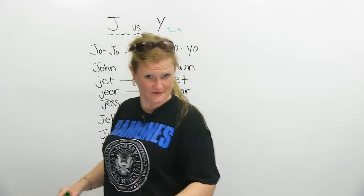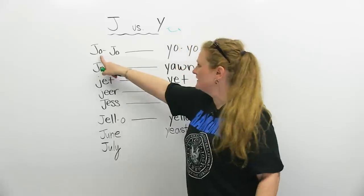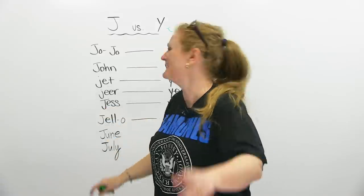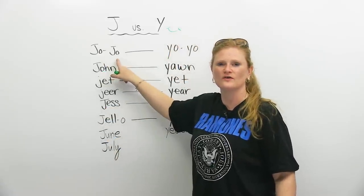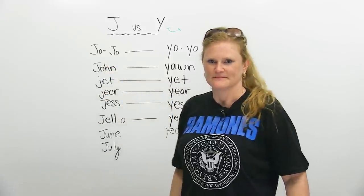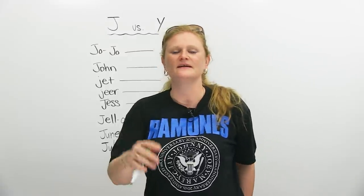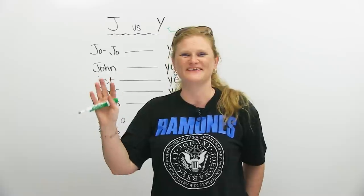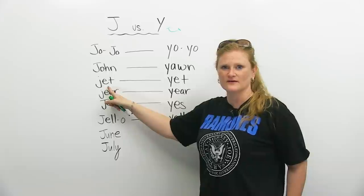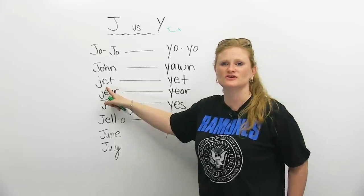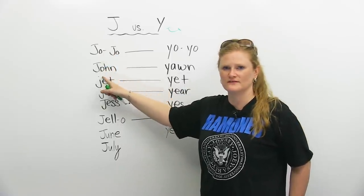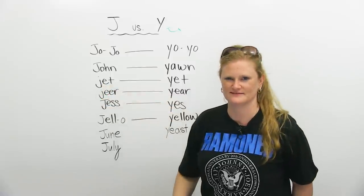Let's go through some examples. Somebody's name: Jojo. Hi Jojo, how are you? This is another name — it's not Juan. In English, we say 'juh' — John. Hi John, how are you? The next thing: a really, really fast airplane is a 'juh' — jet. Jojo, John, jet. You try now.